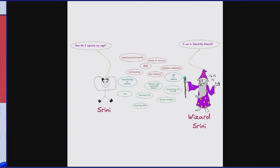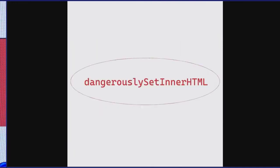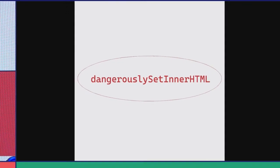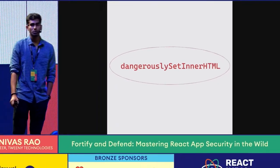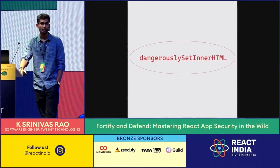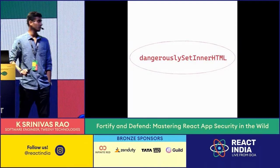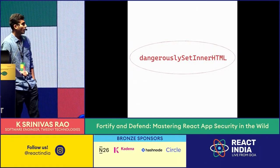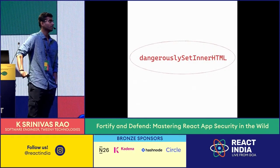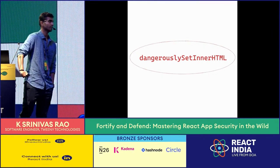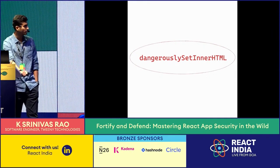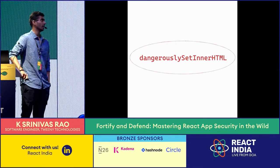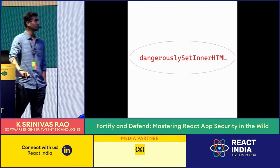Let's jump into our first vulnerability. It's impossible to talk about security in React without talking about the dangerouslySetInnerHTML prop. It is used to directly inject HTML elements into the browser DOM in a React app. If you have built a rich text editor or a CMS, you might have come across it. Otherwise, it's not heavily used in most SaaS apps. Let's see why they named it dangerous.